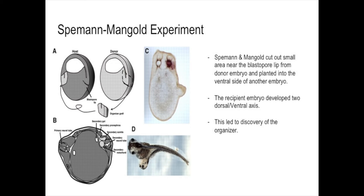In determining the organizer, Figure A shows the experiment Spemann and Mangold used to identify it. Grafting the dorsal lip of the blastopore — the area above the Nieuwkoop Center, known as the organizer — onto the future ventral site of an embryo resulted in gastrulation and formation of structures normally found in the dorsalized region, including somites and neural tube, as seen in Figure B. Two different species of newts were used for their different pigmentation to test whether the axes were derived from the donor or the host. The transplanted tissue induced dorsalization of the host embryo tissues, and a second axis became visible in Figures C and D, proving the existence of the organizer.